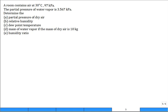We have a room. It contains air at 30 degrees C and 97 kPa. The partial pressure of the water vapor is given to be 3.567 kPa in this moist air mixture.